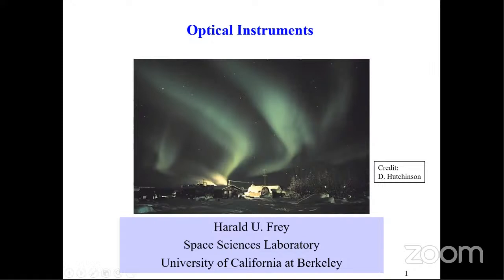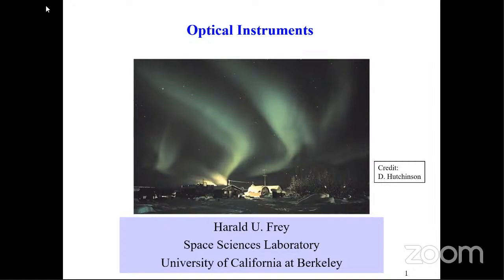He then joined the SSL at UC Berkeley in 1997. His research interests are the observation and analysis of optical phenomena in the ionosphere and magnetosphere of the Earth. He has been the Instrument Scientist for the FUV Instrument on IMAGE and the US Project Scientist for ISUAL. He is currently a co-investigator for the Ground-Based Observatories of THEMIS and the Instrument Scientist of the ICON FUV Instrument. Today he will be talking to us about optical instruments.